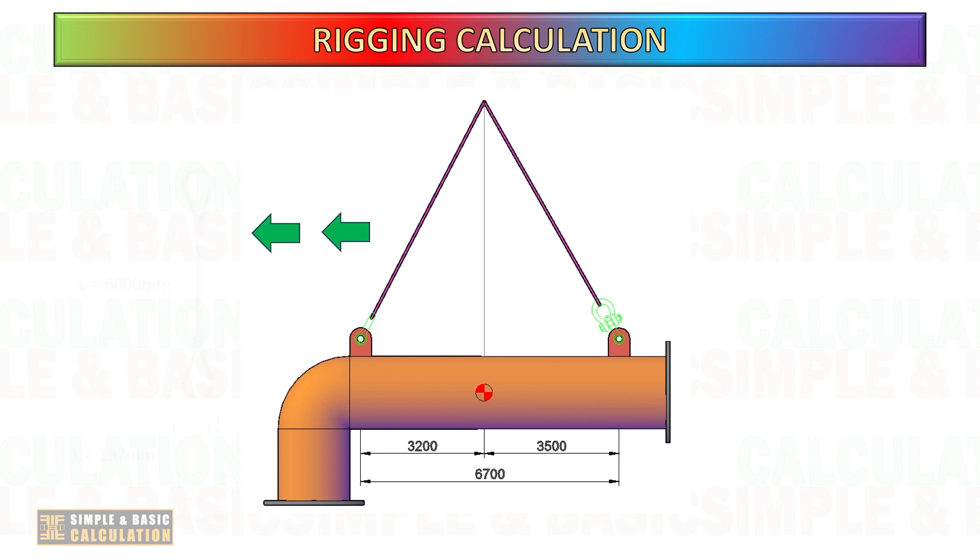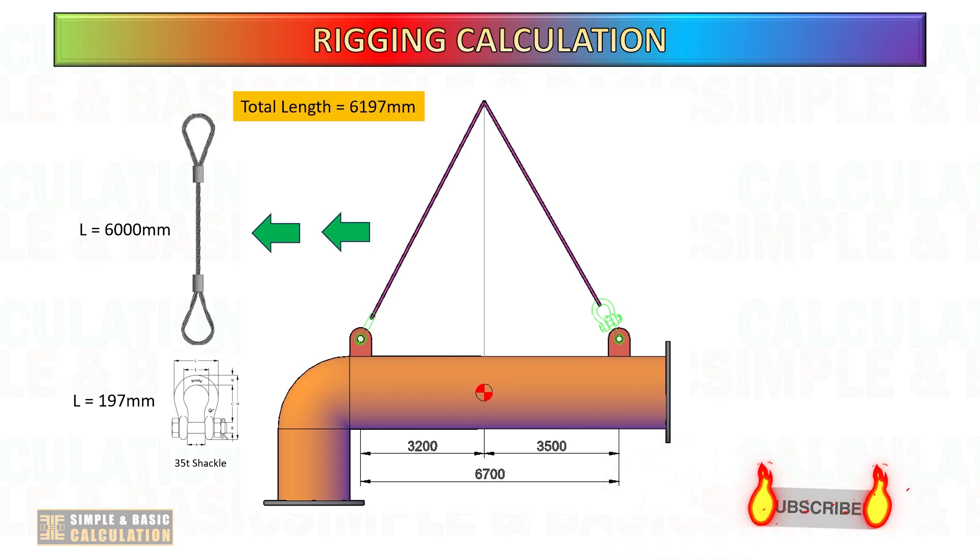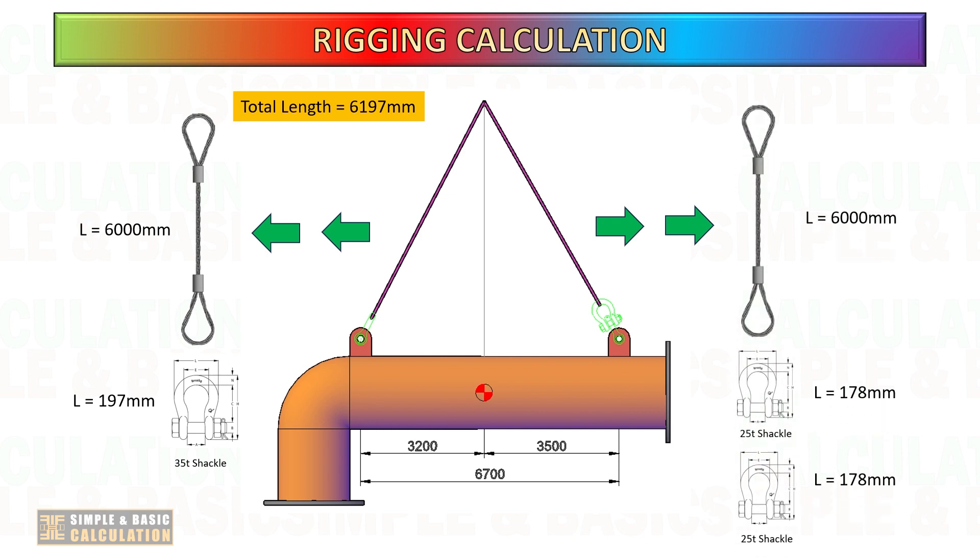Let us combine the total length of rigging for lifting point number 1 and lifting point number 2. For lifting point number 1, we're using 35-ton shackle plus 6 meter of wire sling, and for lifting point number 2 we're using two pieces of 25-ton shackle plus 6 meter of wire sling. The total length of rigging for each lifting point as shown.